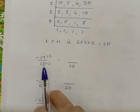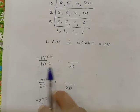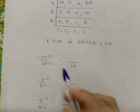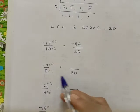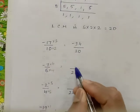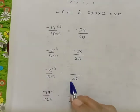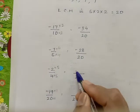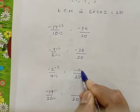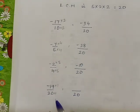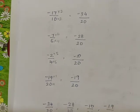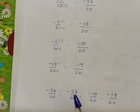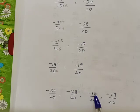First number minus 17 by 10: 10 becomes 20 by multiplying by 2, giving minus 34. Minus 7 by 5: 5 becomes 20 by multiplying by 4, giving minus 28. Minus 2 by 4: 4 becomes 20 by multiplying by 5, giving minus 10. Minus 19 by 20: 20 becomes 20 by multiplying by 1, giving minus 19. So the converted values are minus 34 by 20, minus 28 by 20, minus 10 by 20, and minus 19 by 20.